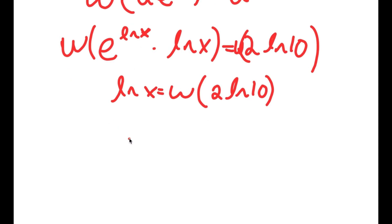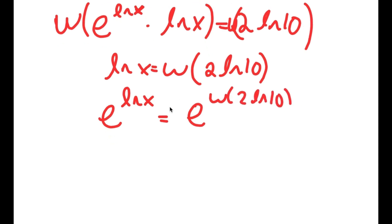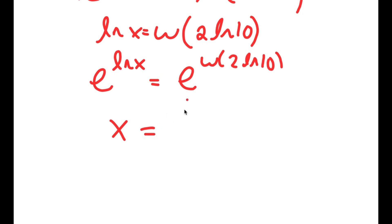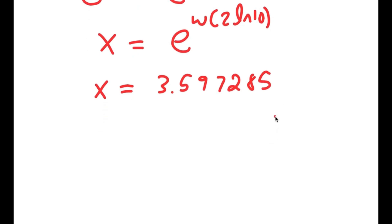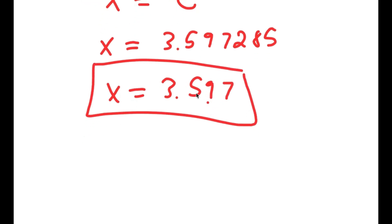Taking e to the power of both sides, e to the power of ln x equals e to the power of W of 2 times ln 10. Since e to the power of ln x equals x, I get x equals e to the power of W of 2 times ln 10, which equals approximately 3.597.